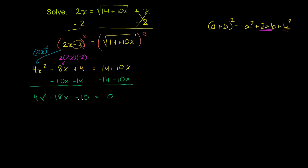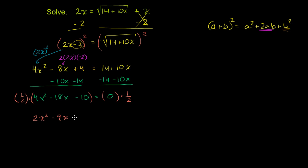Everything here is divisible by 2, so we divide both sides by 2. That gives us 2x² minus 9x minus 5 equals 0. Now let's see if we can factor this using factoring by grouping.